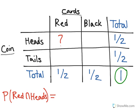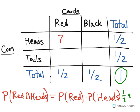Since flipping the coin has nothing to do with the cards you're drawing, these are independent events. We can write this probability as the probability of drawing a red card times the probability of the coin landing on heads. This equals 1/2 times 1/2, which is 1/4.